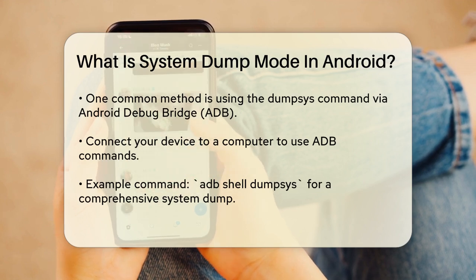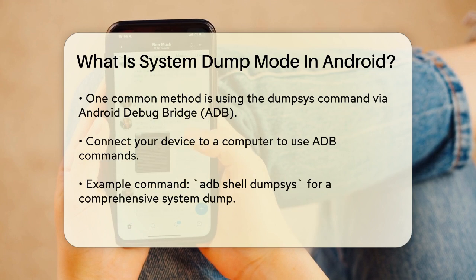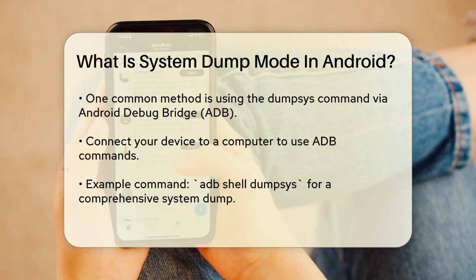Another way to access a form of system dump is by using specific dialer codes. For example, dialing *#9999# on your phone can activate the System Dump Mode, although this method may vary depending on the device and its software version.